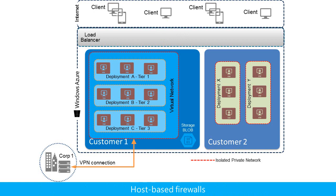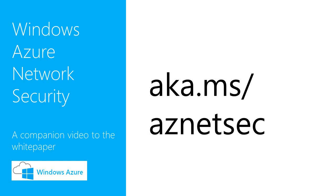The final layer of defense is the host-based firewall on the virtual machine itself. Depending on the operating system, you can define allowed incoming and outgoing traffic by port number or IP address. For additional information, see the Windows Azure Network Security Whitepaper at aka.ms/aznetsec.